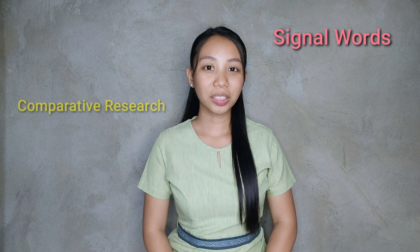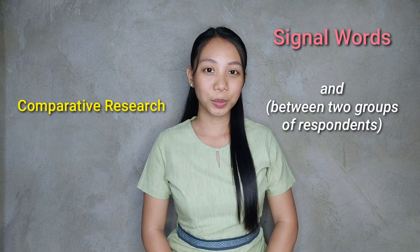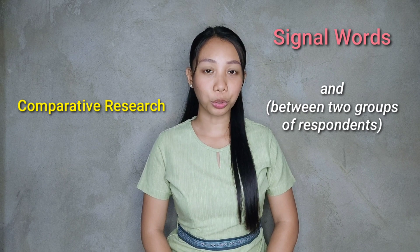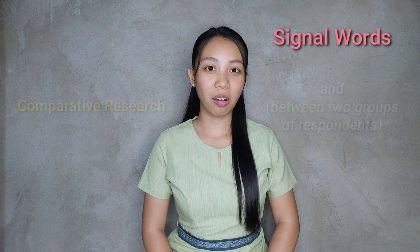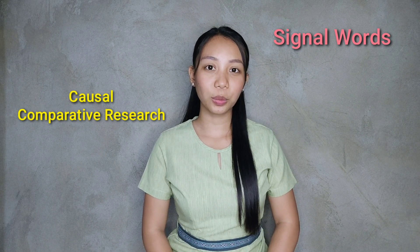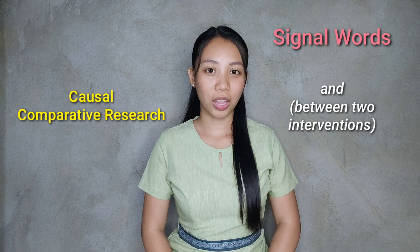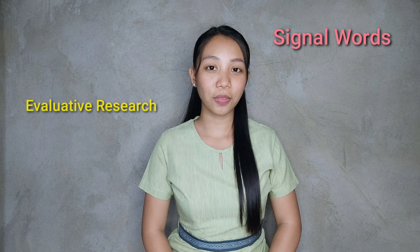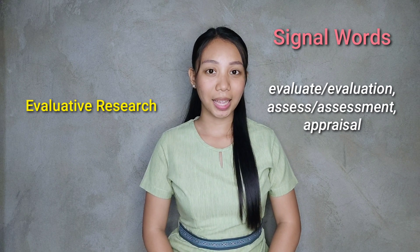Then we have comparative research design, which uses the signal word 'and,' placed between the two groups of respondents. Fifth is causal comparative — the signal word is also 'and,' but it is used between the two interventions. Sixth is evaluative research design — the signal words are evaluate, assess, and appraisal.